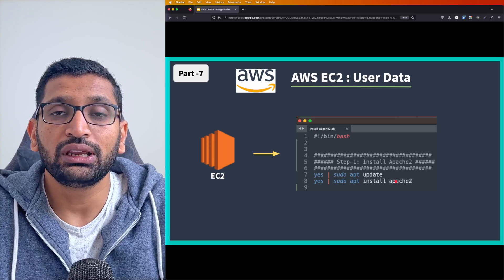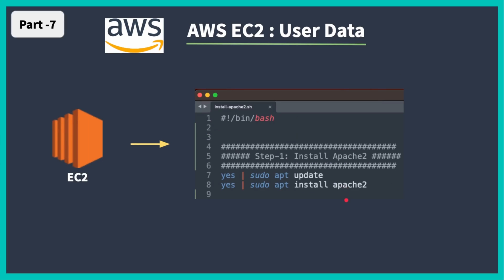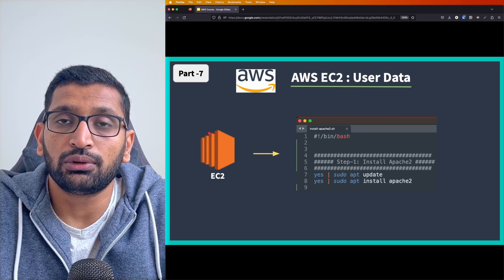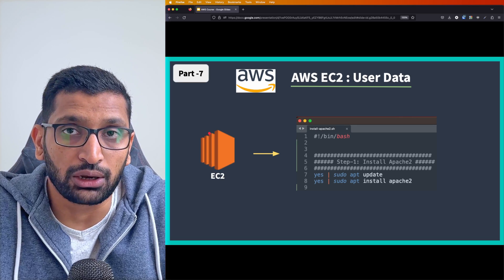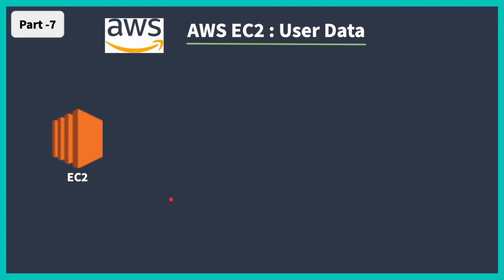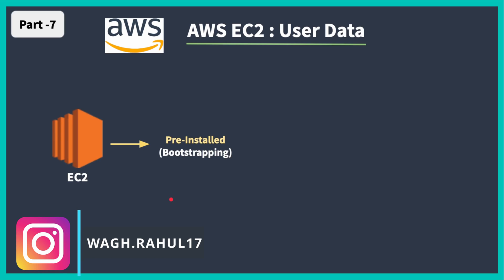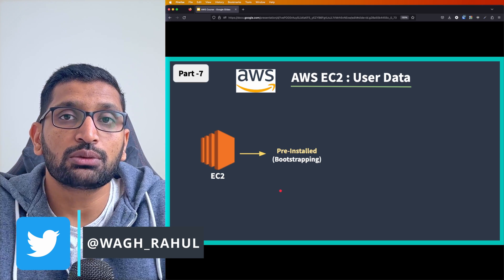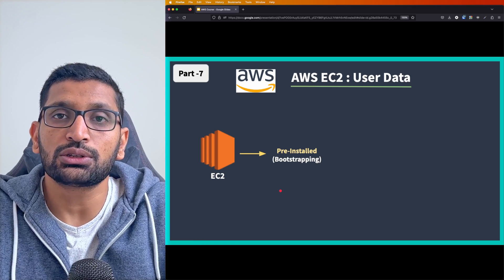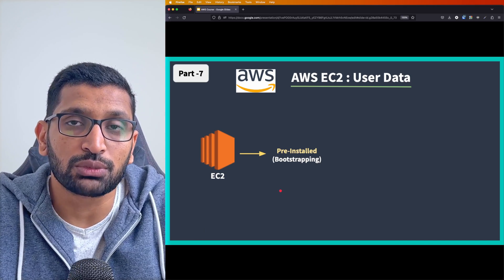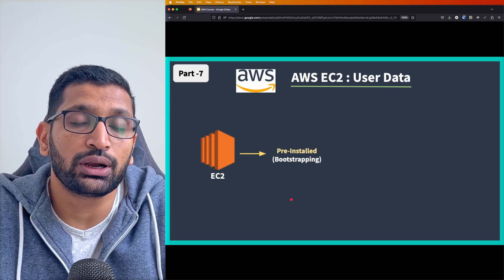Let's first understand why we need a user data script. On screen you can see an EC2 on the left and a bash script on the right. This bash script installs Apache 2 on a Linux EC2 machine. We call this bootstrapping — whenever you want to pre-install certain packages onto your EC2 machine, you should use the user data script provided by AWS.